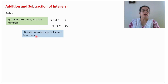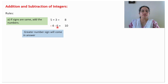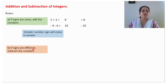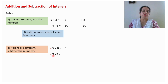Greater number sign will come in the answer. Which number is greater: 5 or 3? 5 is greater, 5 is positive, so the answer will be positive. 4 and 6: which number is greater? 6 is greater, 6 has minus sign, so the answer will be negative. If signs are different, subtract the number: 8 minus 5 will give you 3. Signs are different, subtract the number: 9 minus 3 will give you 6.